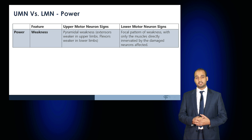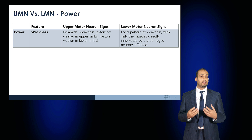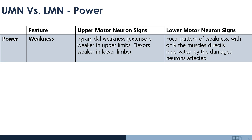The key is to determine whether power is normal or whether there is loss of power in an upper motor neuron or lower motor neuron fashion. With upper motor neuron lesions there is pyramidal weakness — extensors weaker in the upper limbs, flexors weaker in the lower limbs. With lower motor neuron signs there is a focal pattern of weakness, with only the muscles directly innervated by the damaged neurons being affected.